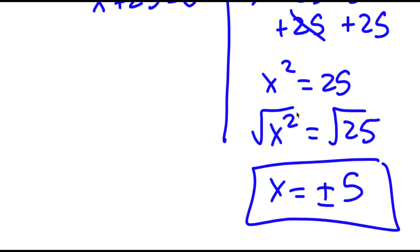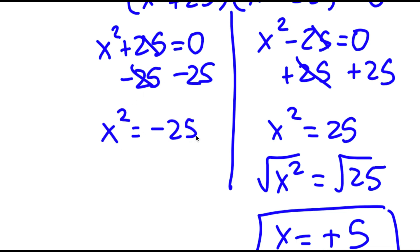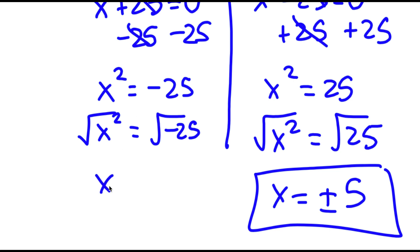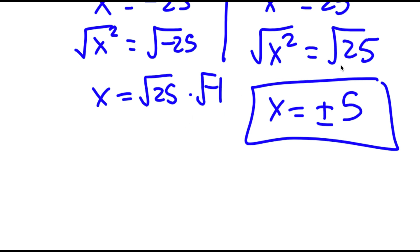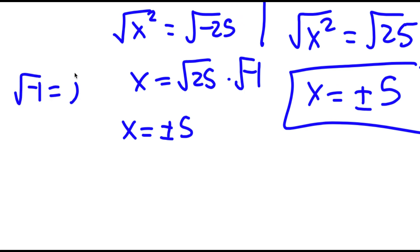Now for x squared plus 25 is equal to 0, I'm going to subtract 25 on both sides. These two cancel out, so now I have x squared is equal to negative 25. I'm going to take the square root on both sides. The square root of x squared is x, and the square root of negative 25 — I can rewrite this as the square root of 25 times the square root of negative 1. The square root of 25 is positive or negative 5, and the square root of negative 1 is equal to the imaginary number i. So now I have x is equal to positive or negative 5i.